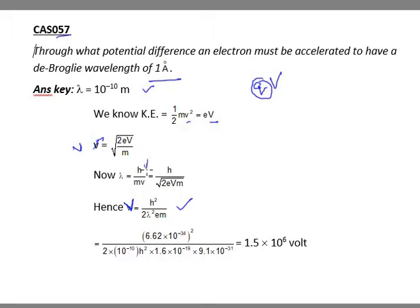Consider lambda and this equation. Now I will square both of them. So lambda square, V value will be h square by 2 lambda square em.